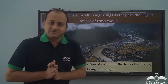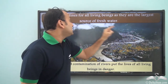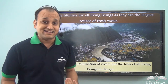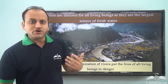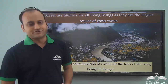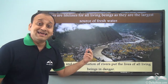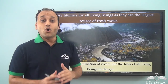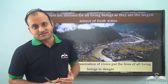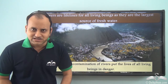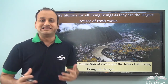Rivers are lifelines for all living beings, as they are the largest source of fresh water — which is what we need to survive. It is very important that we take care of all these rivers. Pollution and contamination of rivers put the lives of all living beings in danger — not just us, but all plants and animals are affected by the pollution we cause. So it is very important that we take proper steps to ensure rivers are not polluted and we get a constant supply of fresh water.